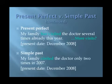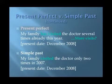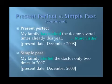Now try again to understand the difference through these two examples. Using the present perfect: my family has visited the doctor several times already this year — this year is 2008, it's not over. And with the simple past: my family visited the doctor only two times in 2007 — 2007 is a closed period of time.